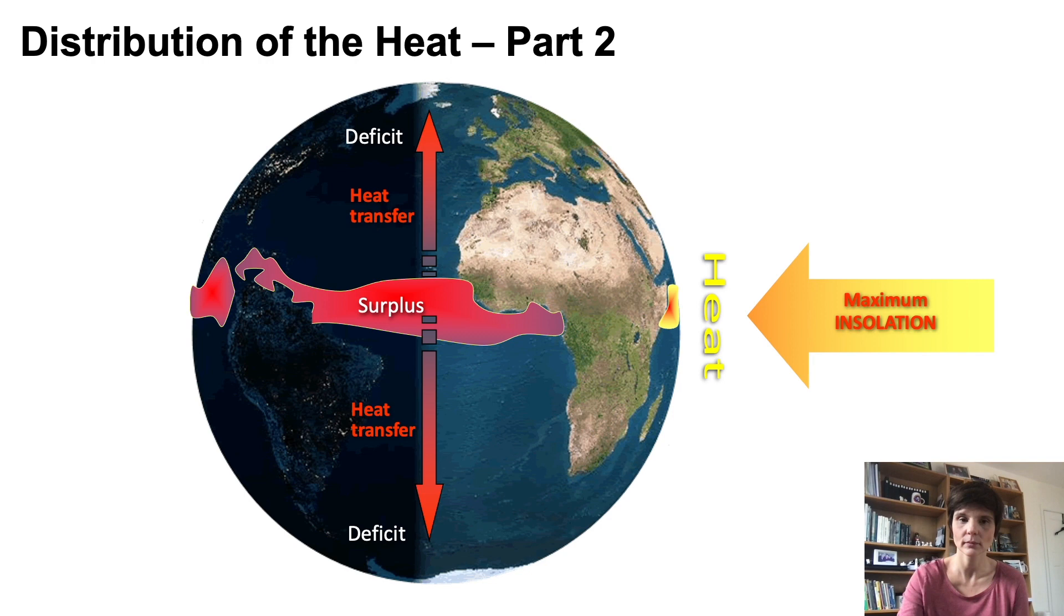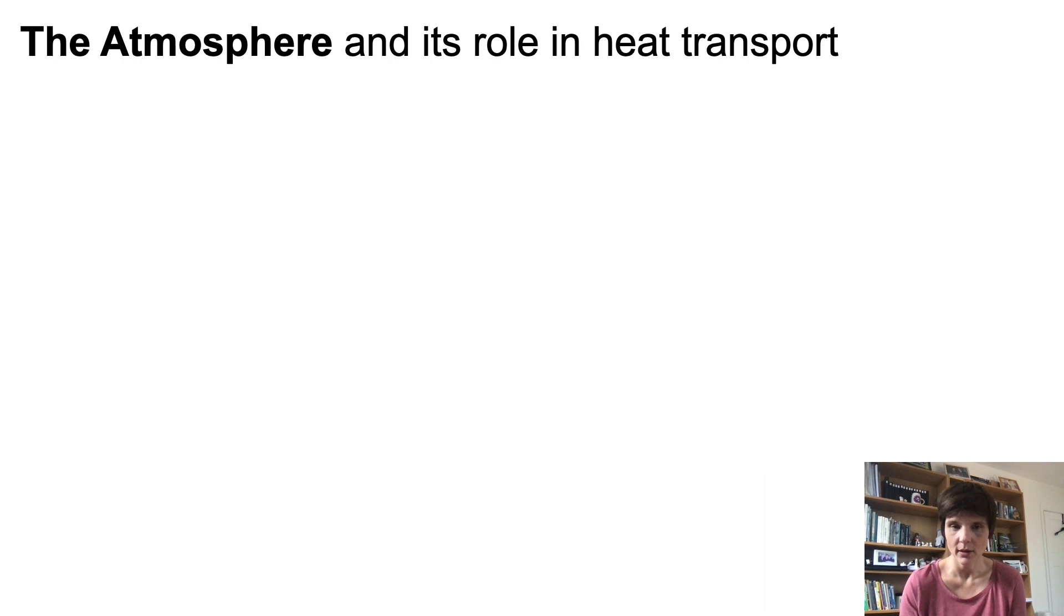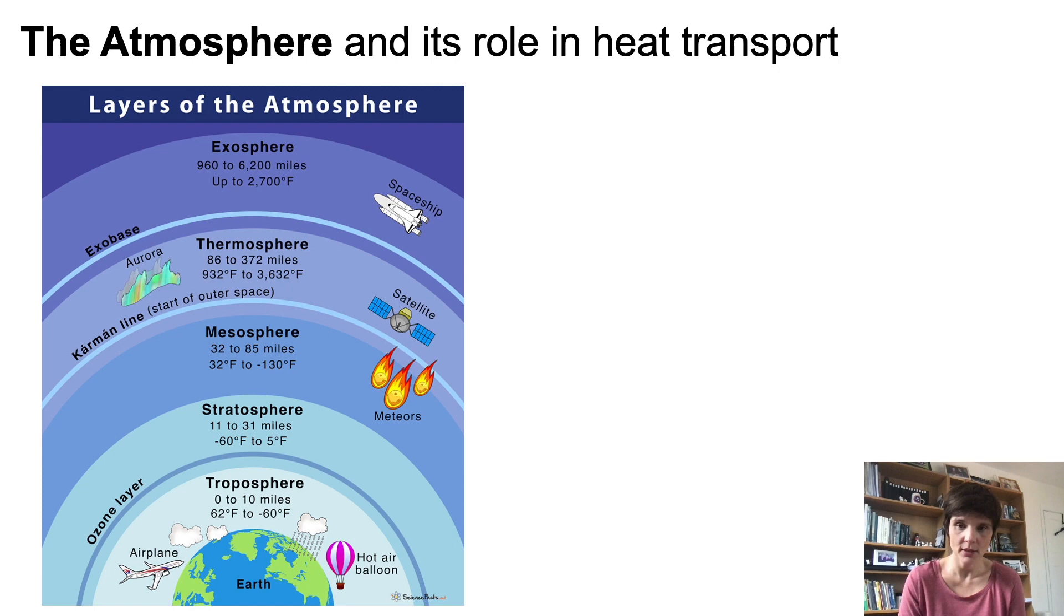I'm going to explain first the role of the atmosphere. The atmosphere has five layers, which are very different in composition, which means that they have different physical and chemical properties and different roles in the climate system. The layer in contact with the Earth's surface is called the troposphere, and here is where the weather and the climate happen.